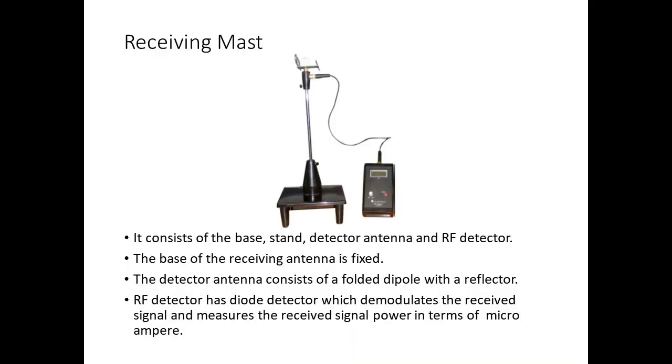Receiving mast. It consists of a base, stand, detector antenna and RF detector. The base of receiving antenna is fixed. The detector antenna consists of a folded dipole with a reflector. RF detector has a diode detector which demodulates the received signal and measures the received signal power in terms of microamperes.